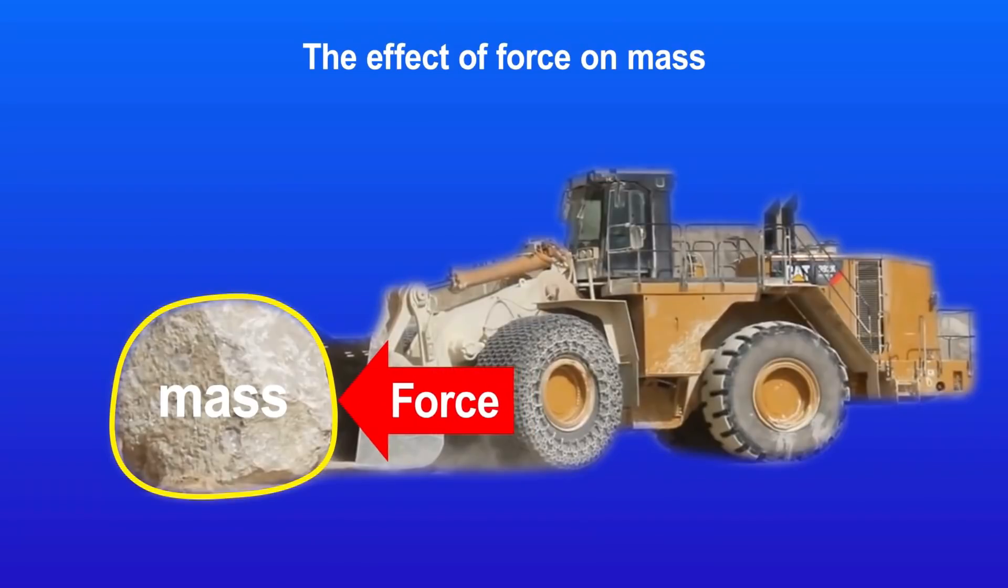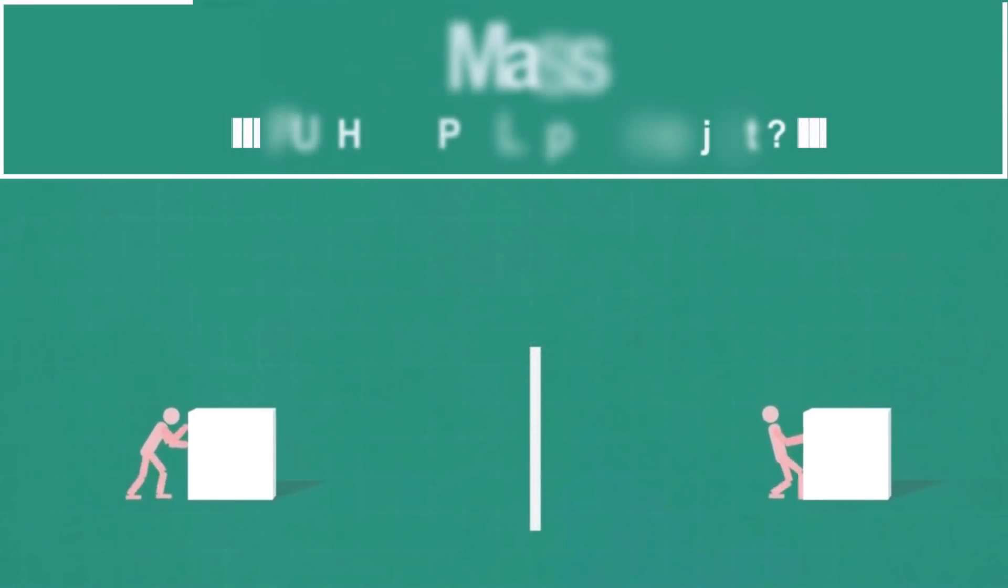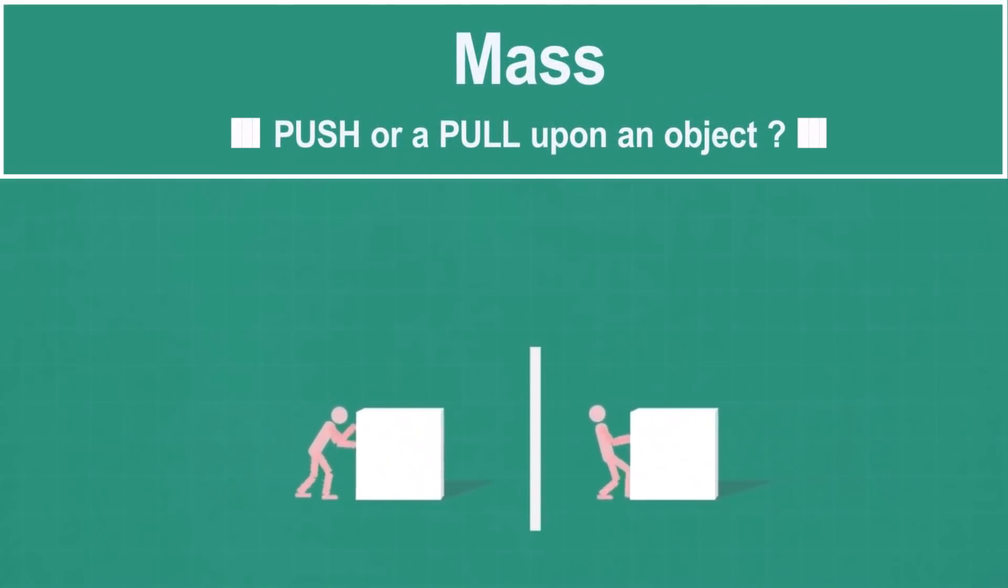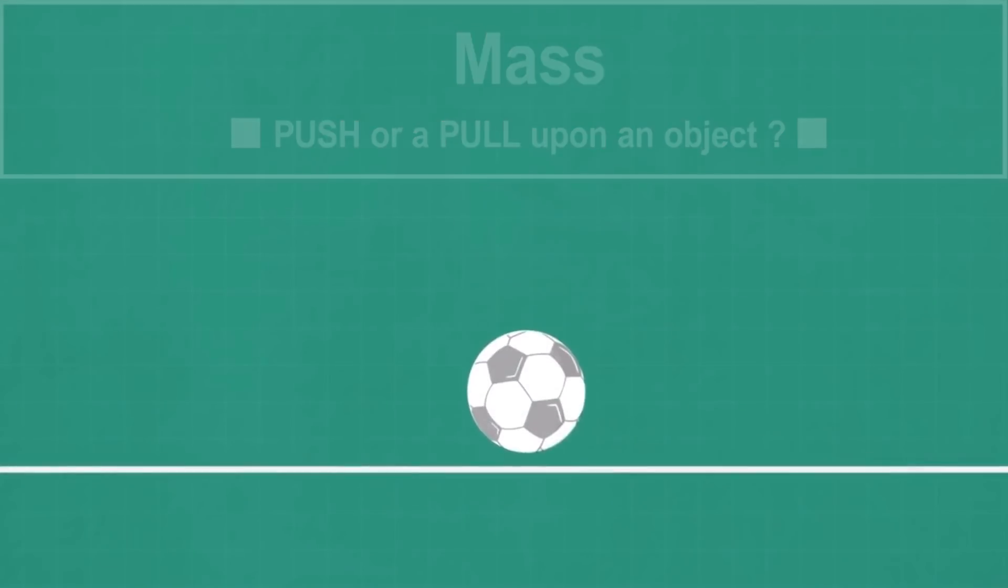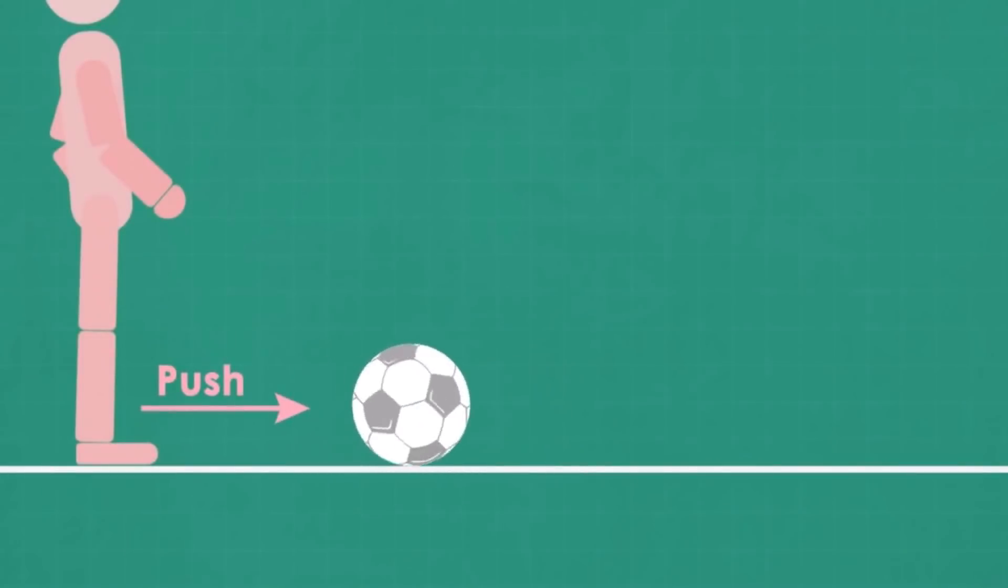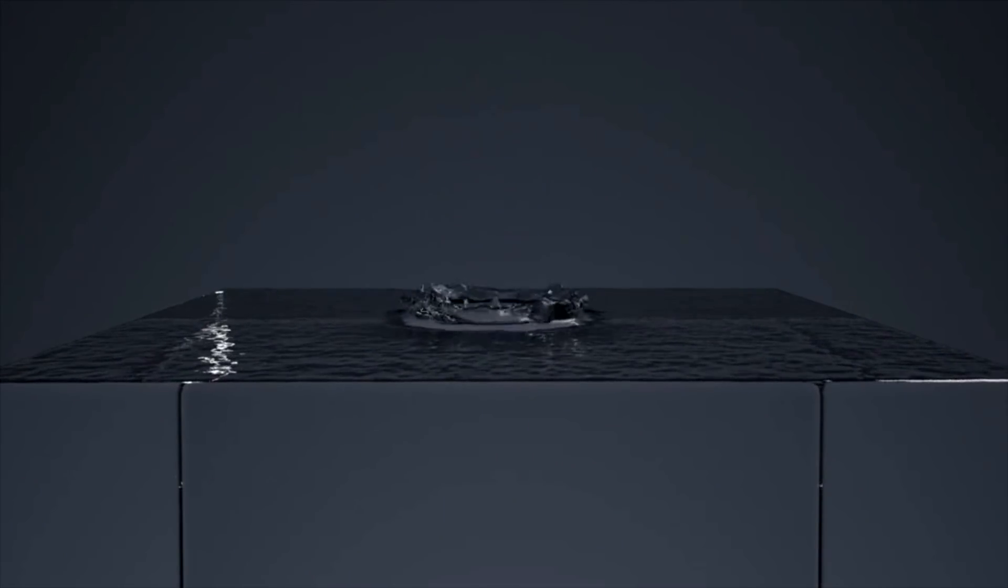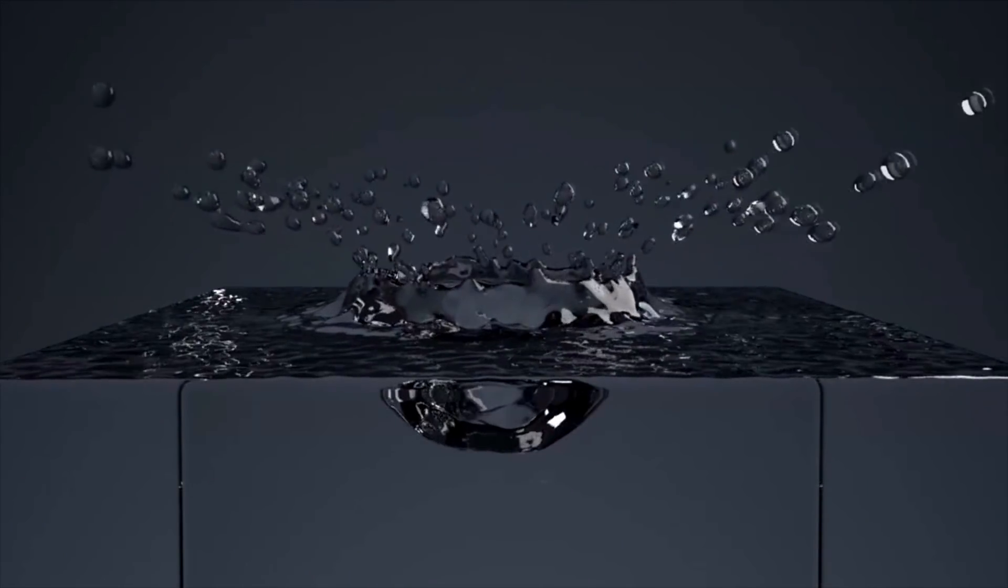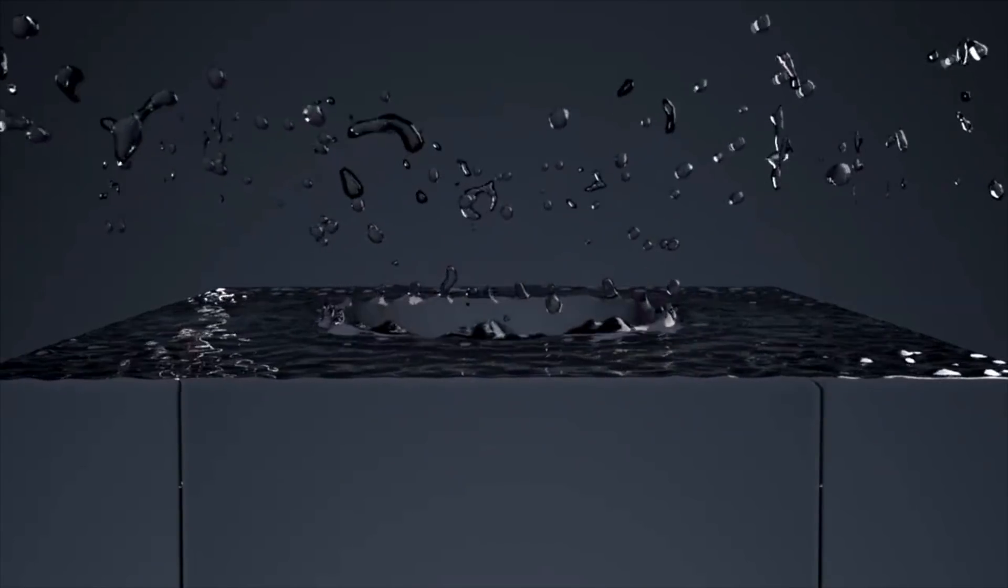The mass by definition is a measure of resistance of an object through acceleration when a force is applied. And in principle, the mass occupies space and it is there where the force takes effect.